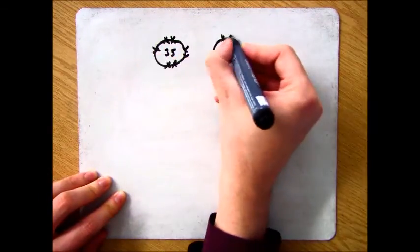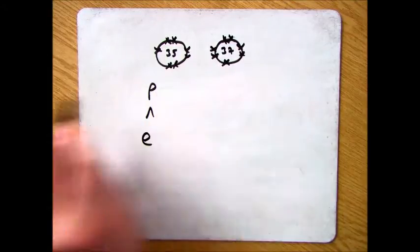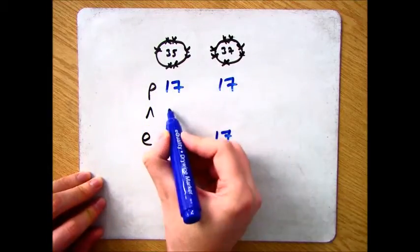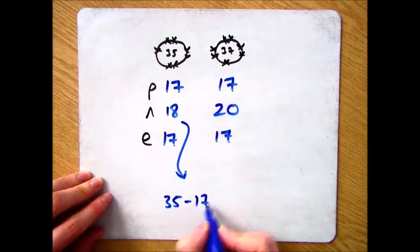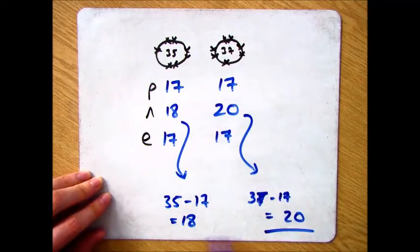Now to explain that, we're going to have a look at chlorine 35 and chlorine 37, which are two isotopes of chlorine, which as you can see here have the same number of protons and a different number of neutrons.